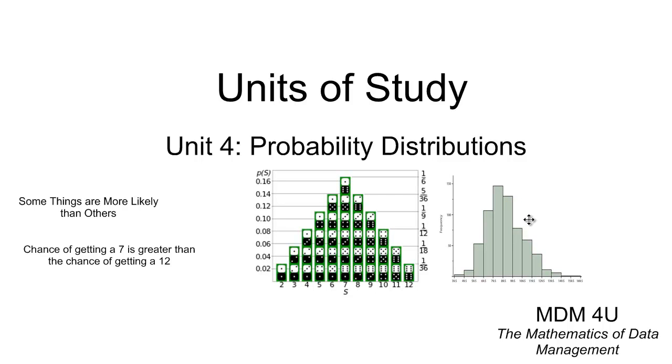That being said, not everything distributes like the chances of getting a 7 when you roll two dice. We're going to learn about those probability distributions, and this will take us about 11 days.